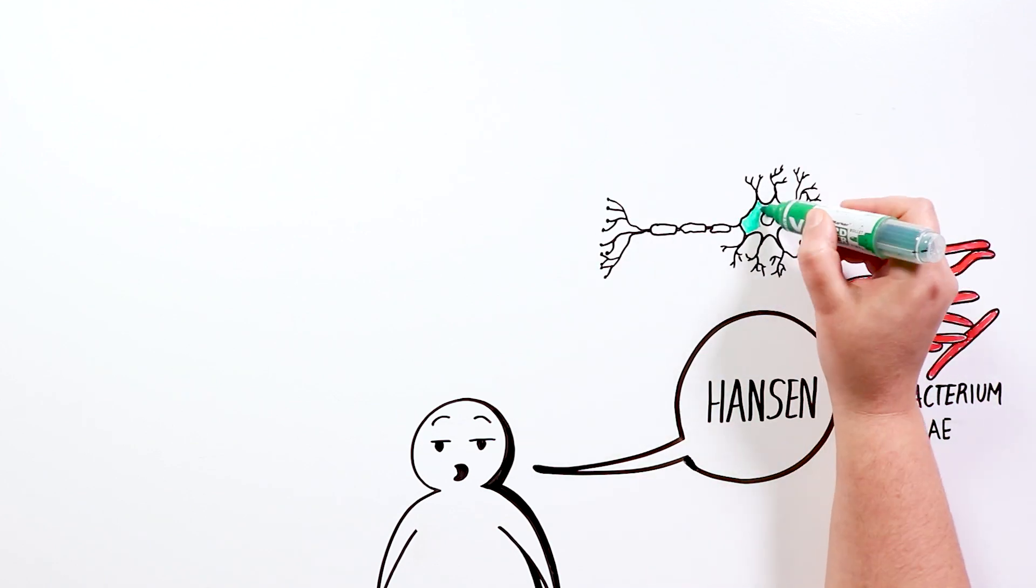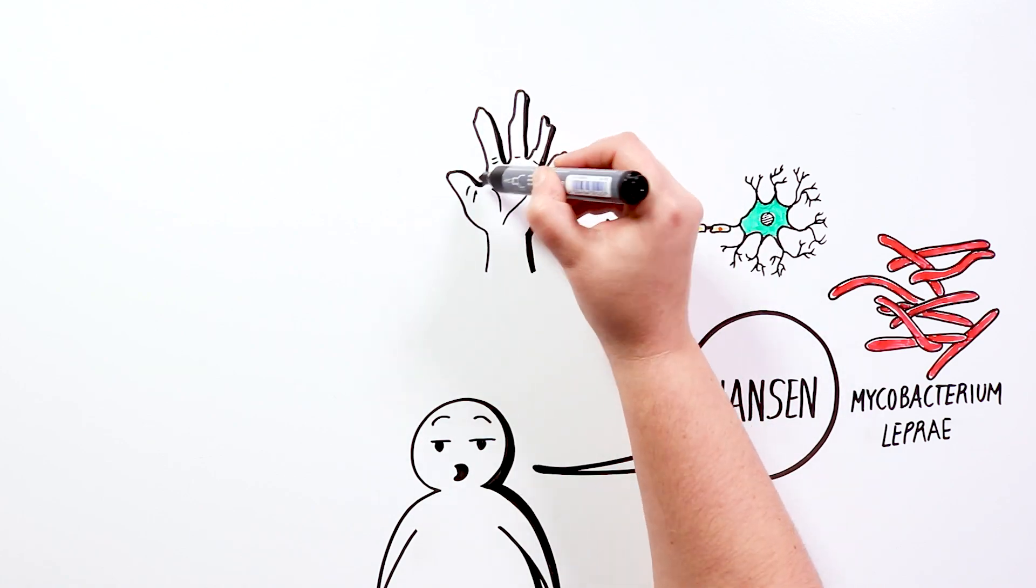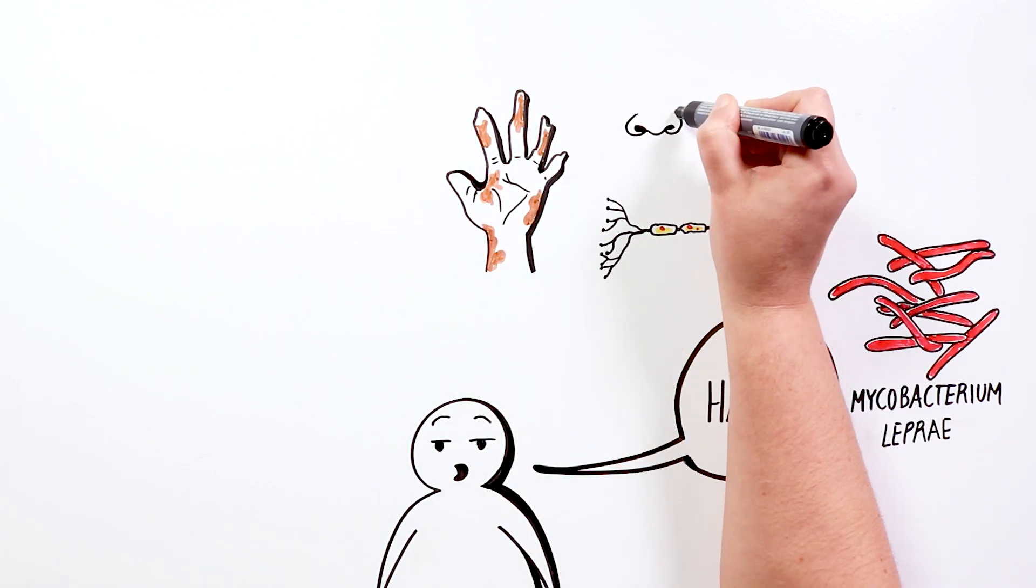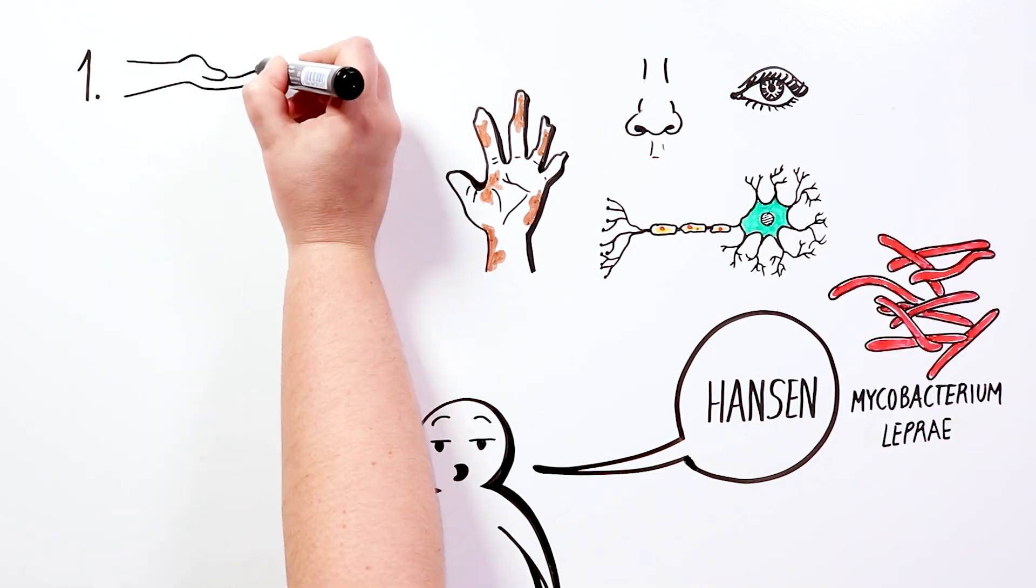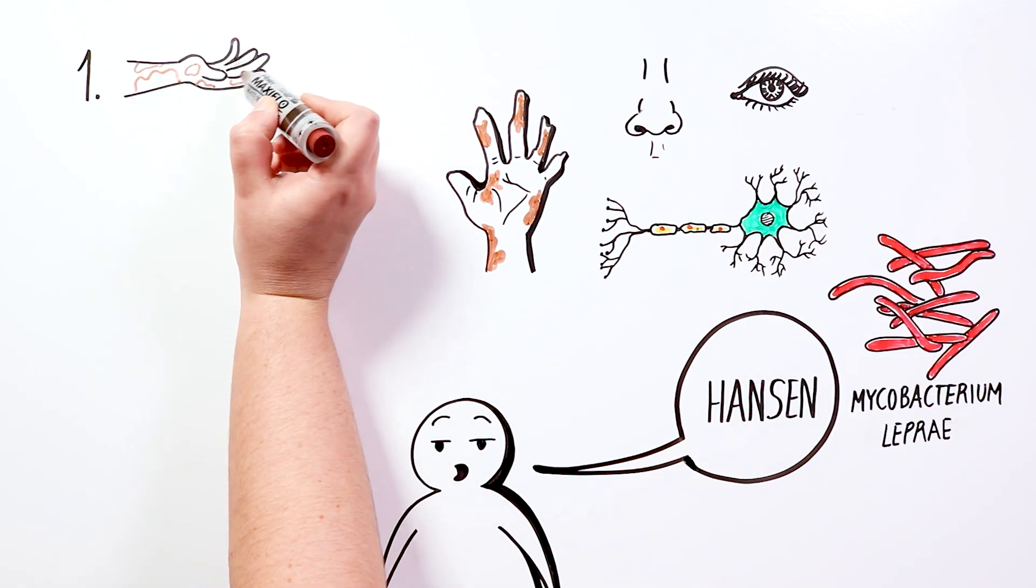which mainly affects the peripheral nerves in the skin, but also to other areas, such as the mucous membranes of the upper respiratory tract and the eyes.